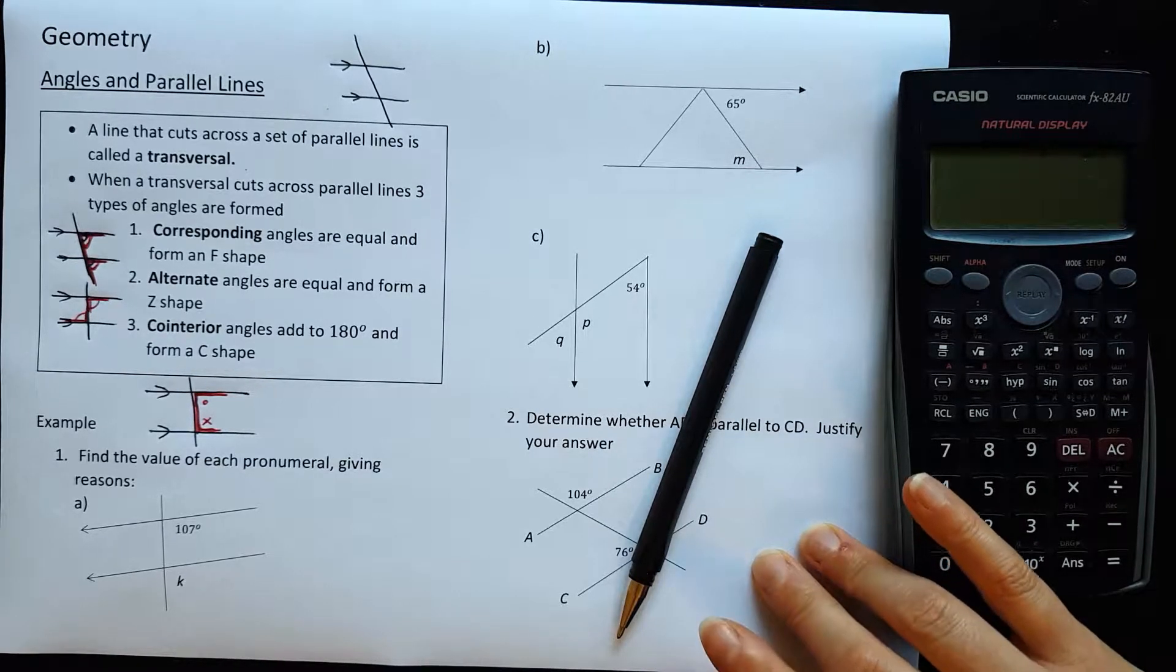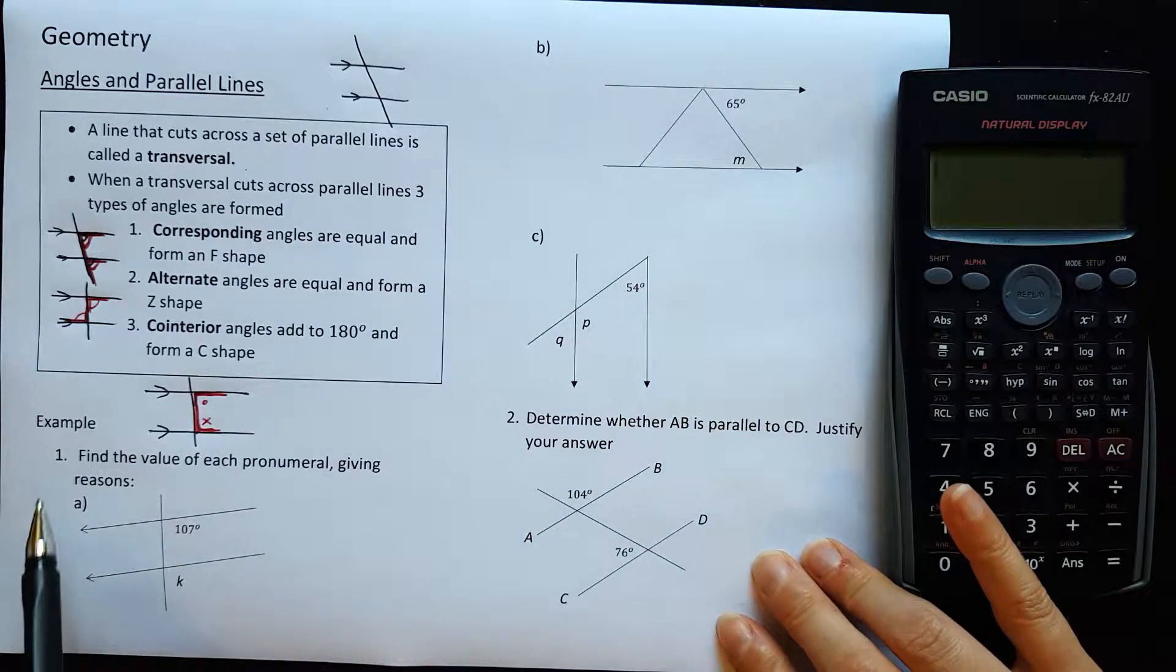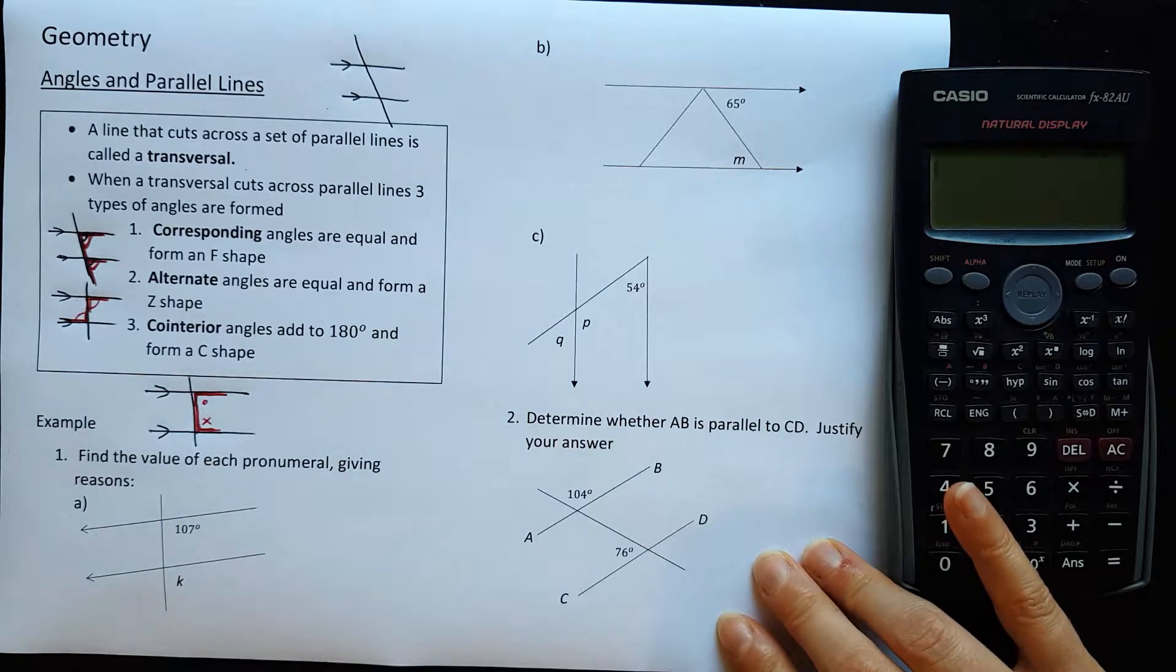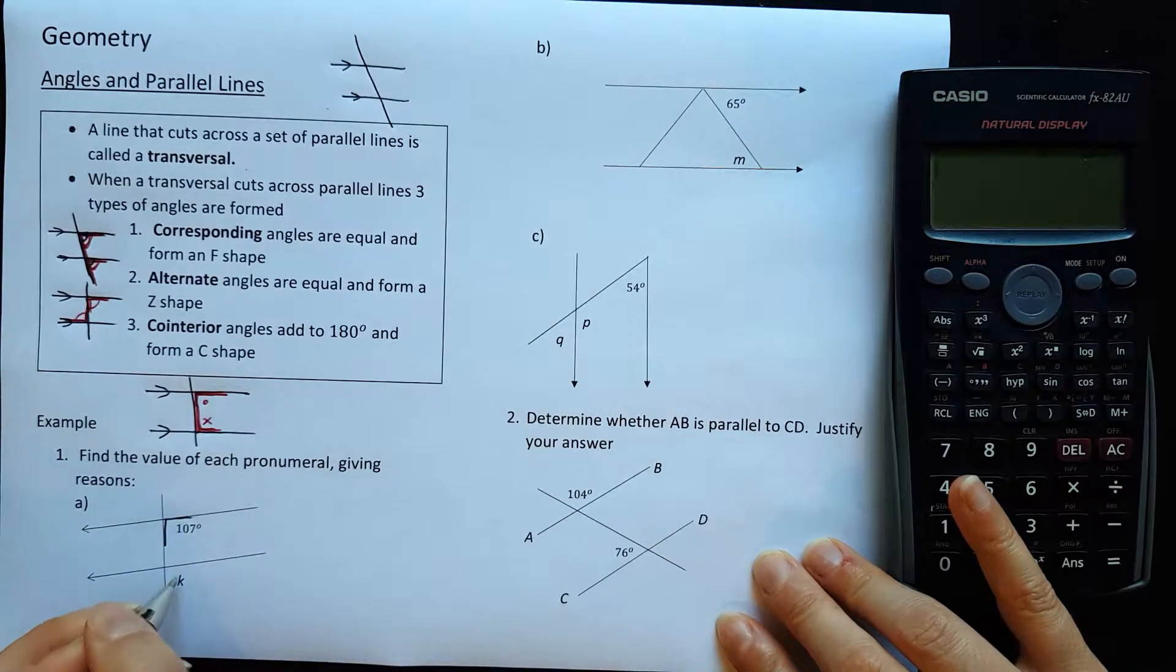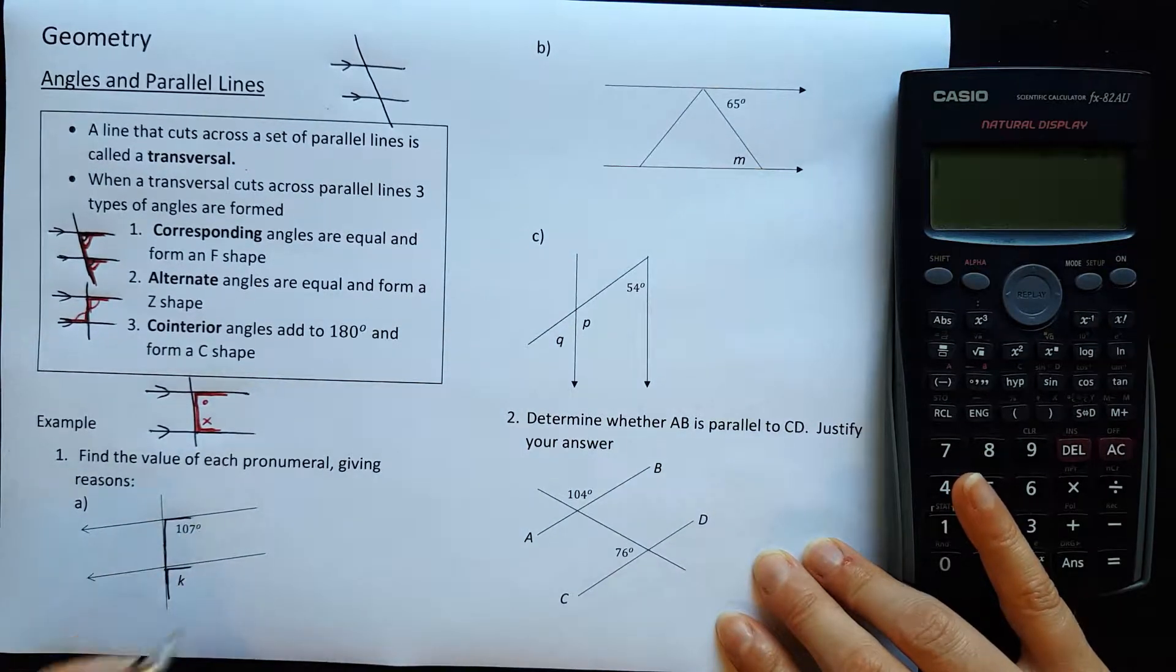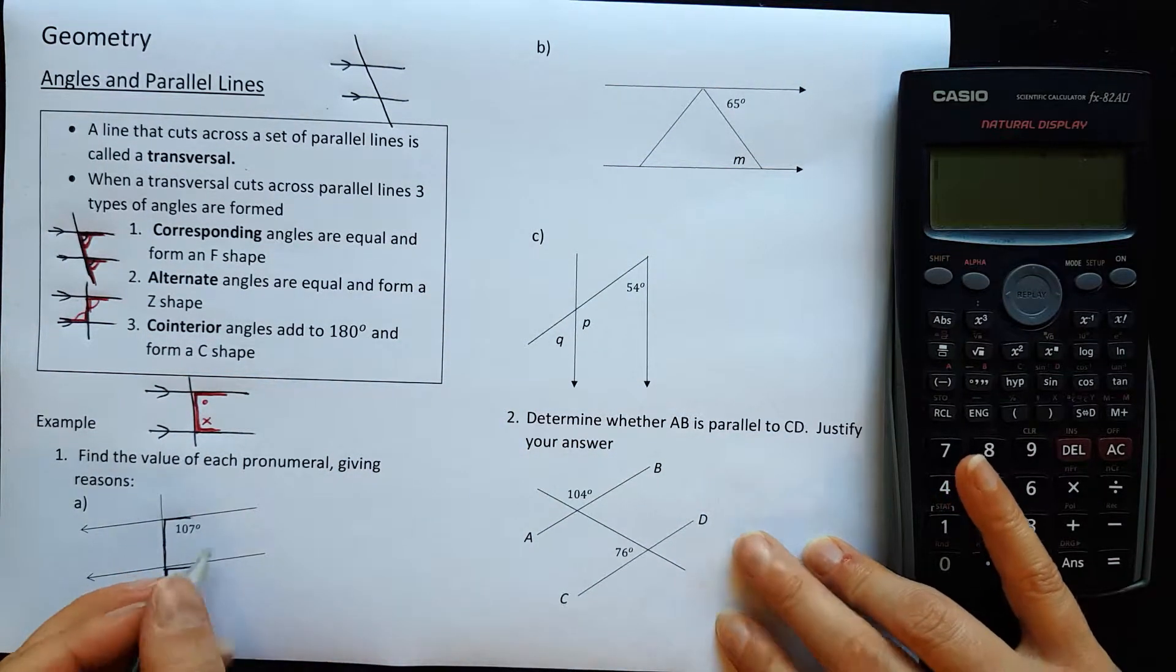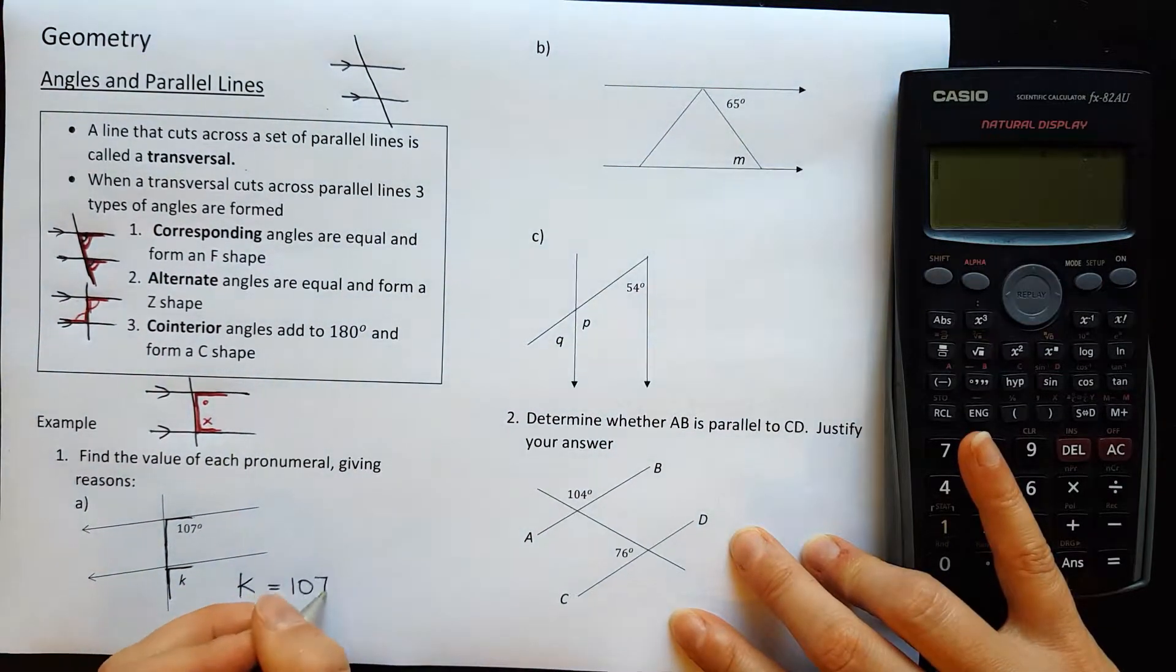Now let me show you how to use those rules to help you find the value of some pronumerals. So in the examples here, number one, find the value of each pronumeral giving reasons. So I want to find the value of K here. Now if we draw the arms on that angle and the arms on that angle and join them up, we've made an F shape, which is corresponding angles and those angles must be equal.